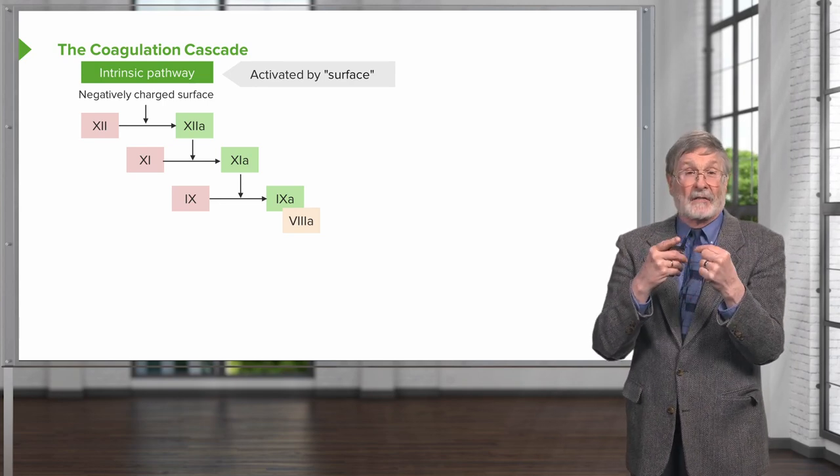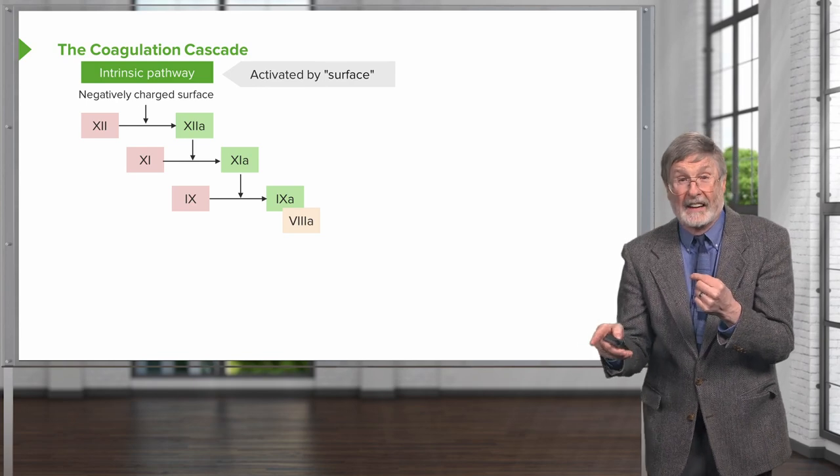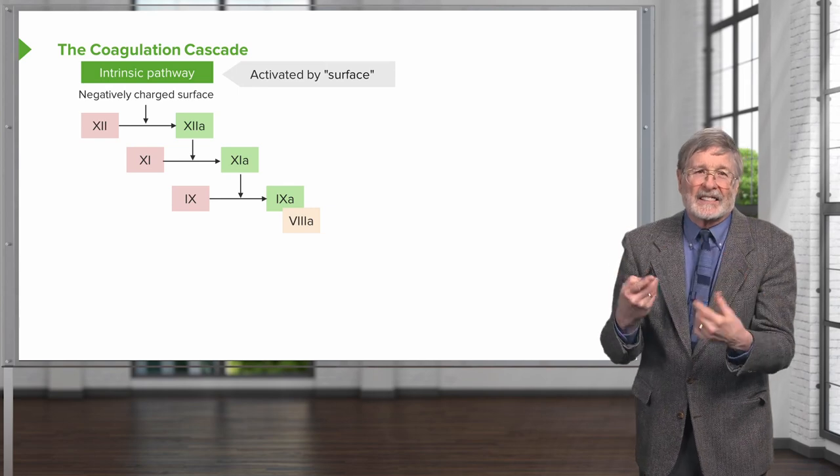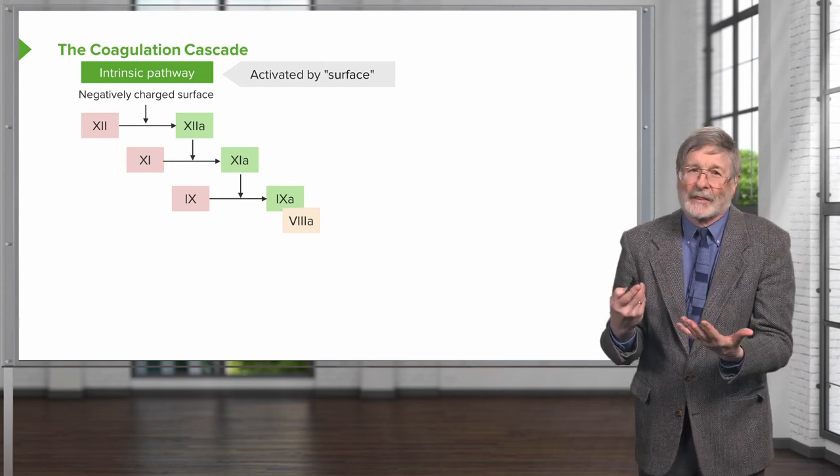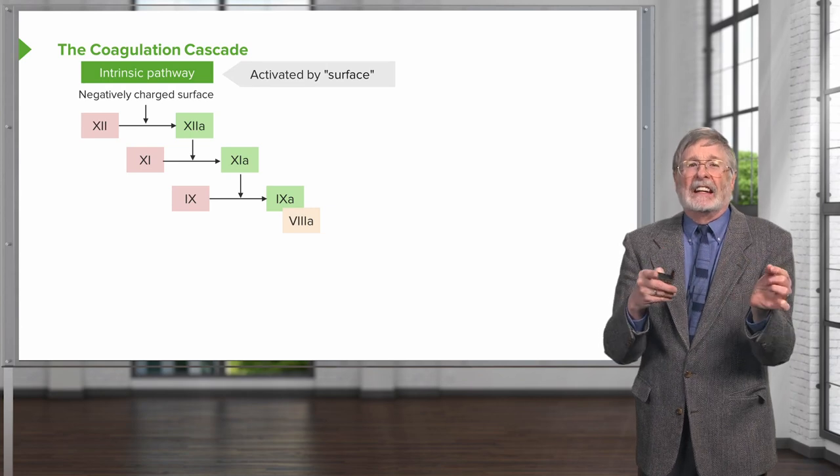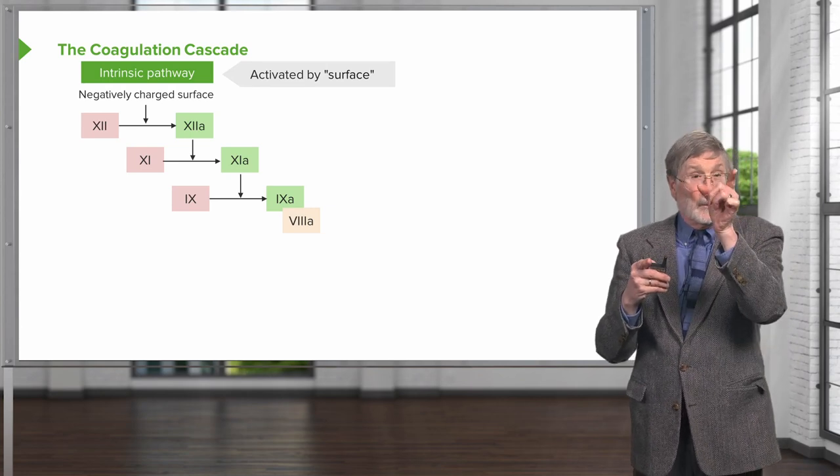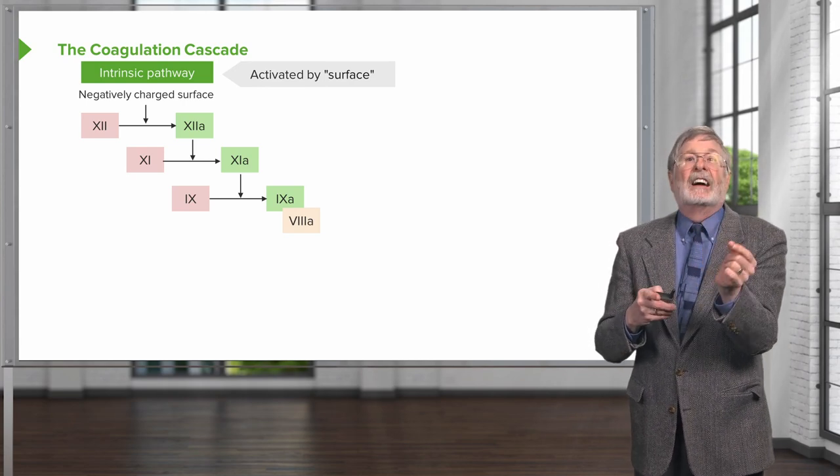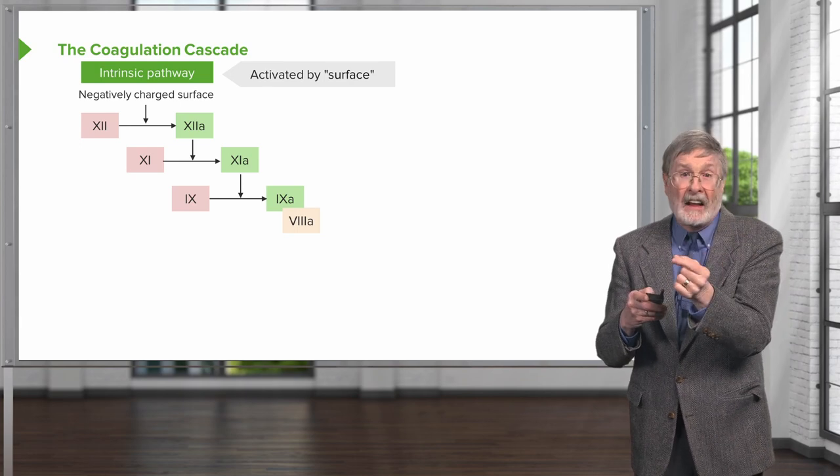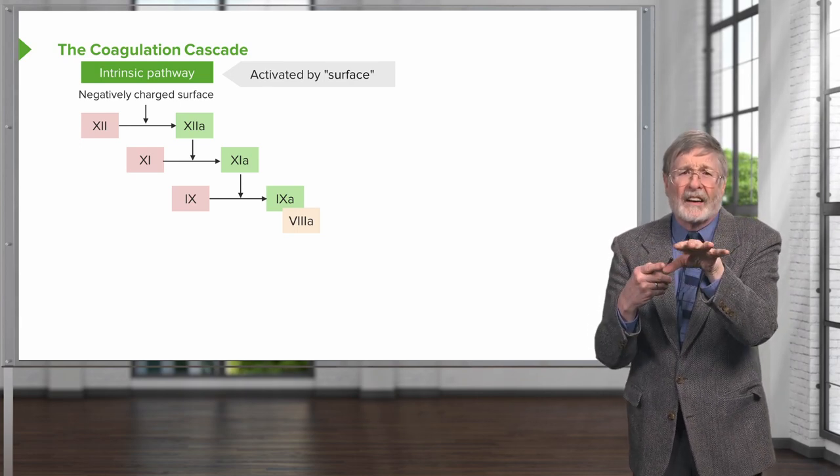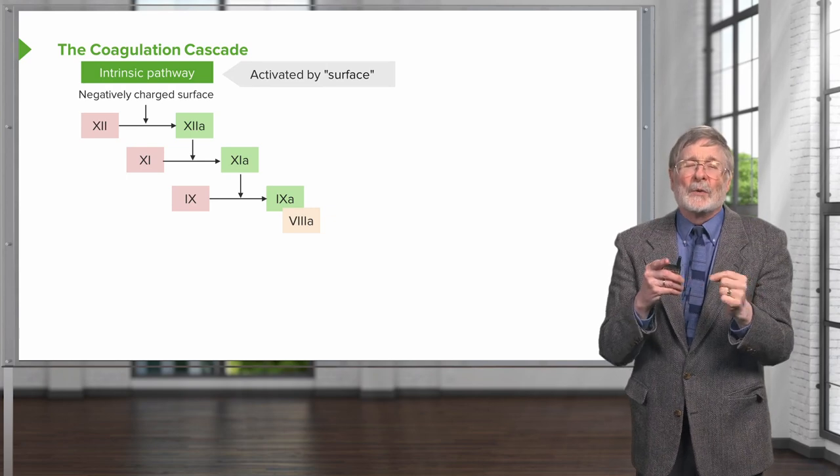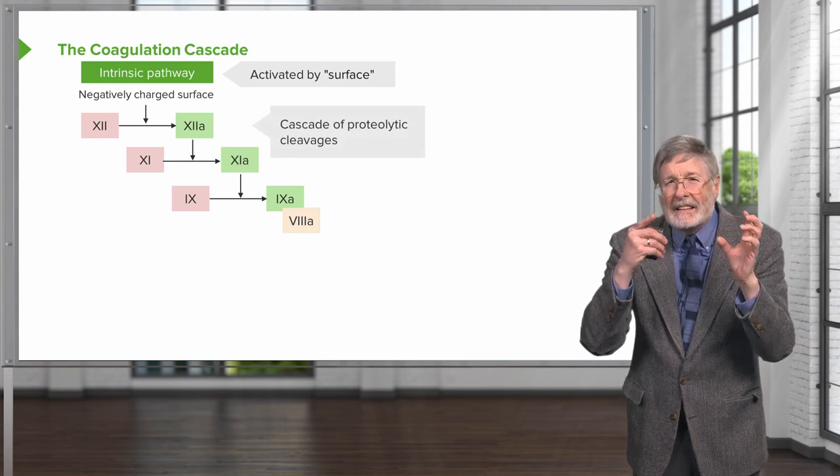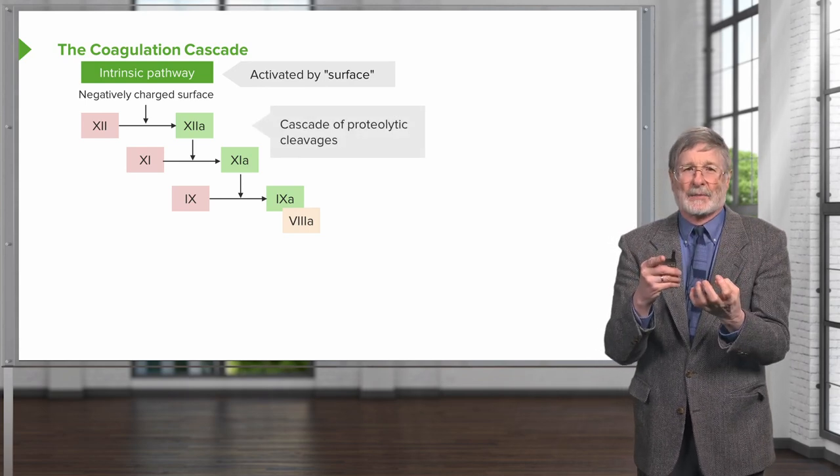Factor 1, all the way down in the lower right-hand corner, was the first one discovered. Factor 12 was one of the later ones to be discovered. We just have to go with it. They don't go necessarily in appropriate sequence. What is shown here: 12 to 12a, 11 to 11a, suddenly we missed 10—it's 9 to 9a. And then somehow we brought in factor 8a. Don't get too embroiled in all of the various details. Keep in mind the bigger concepts.